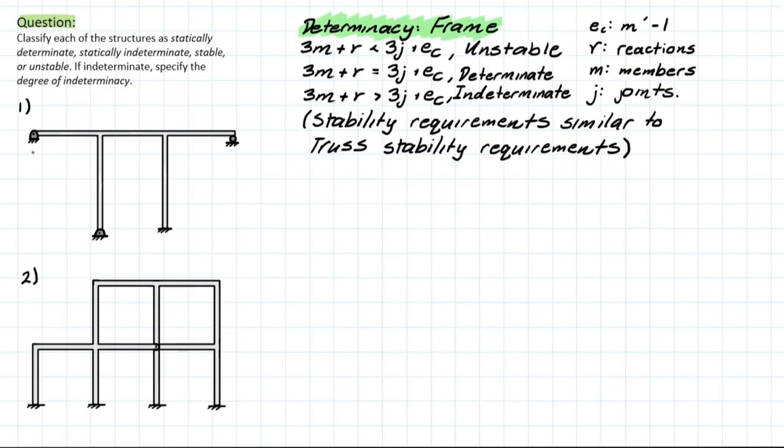So if we take a look at this first one, the first thing we should do is identify the reactions. So we have a pin connection here, we have 2, another pin over here which is another 2, a fixed connection which has 3, and then the roller support which has 1. So that means the number of reactions is going to be 2 plus 2 plus 3 plus 1, which is going to equal 8. Now we can identify the number of joints, each support is going to count as a joint, and each rigid connection is going to count as a joint as well. So that means the number of joints in total here is going to be 6.